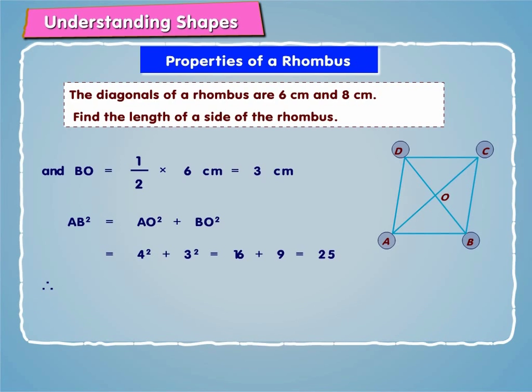Therefore, AB is equal to 5. Therefore, length of each side of the rhombus is equal to 5 cm.